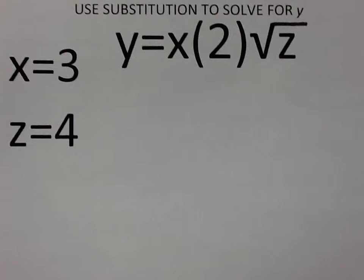So here we have the equation, y equals x multiplied by 2 multiplied by the square root of z. We can use substitution to solve for y.